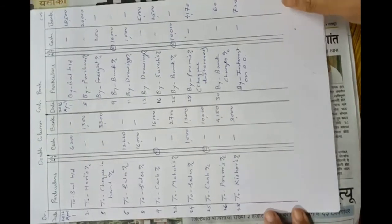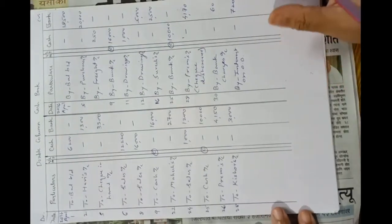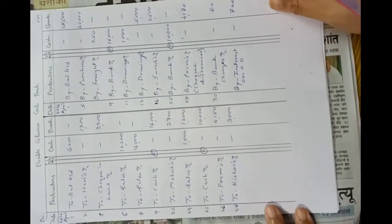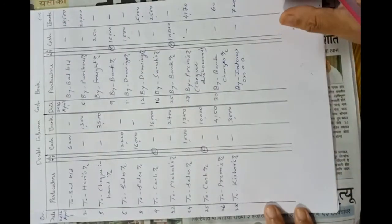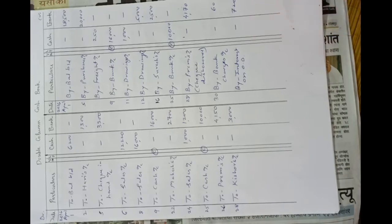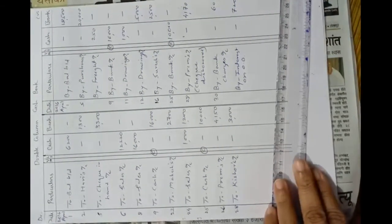Now we have completed posting every transaction and passing journal entries. We will now tally the double column cash book.